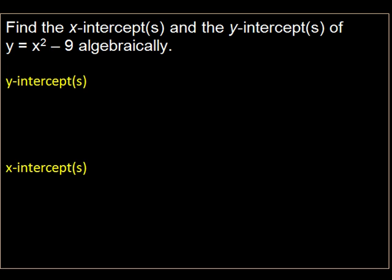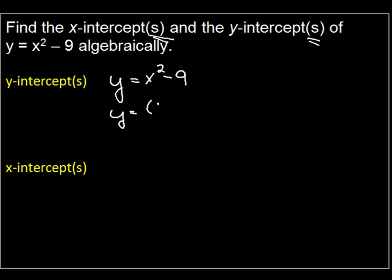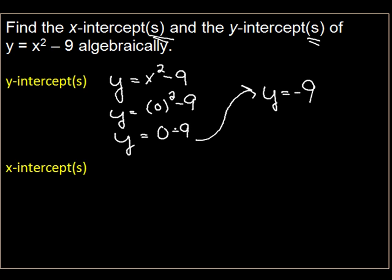Find the x-intercepts and y-intercepts of y equals x-squared minus 9 algebraically. Note that in your homework and in the book, you'll always have an 's', meaning multiple — we could have one intercept or more than one. For the y-intercept, we write out the equation y equals x-squared minus 9, and since the x-value is zero, we substitute zero in for x. Zero-squared is zero, so our y-intercept is negative 9. Written as an ordered pair: (0, -9).